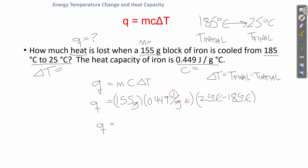When something is losing heat, Q is negative. This block is cooling down, so Q is negative. If something is gaining heat and heating up, then Q is positive. Checking significant figures: I have 3 sig figs, 3 sig figs, 2 sig figs, and 3 sig figs, so I'm limited to 2 sig figs. Rounding, my final answer is negative 11,000 joules.